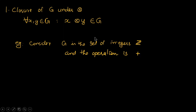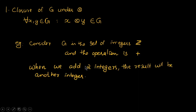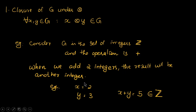Let us find out whether the closure property is satisfied. When we add two integers, the result will be another integer, so the result also belongs to the set of integers. For example, if we take X equal to 2 and Y equal to 3, then X plus Y is equal to 5, which belongs to the set of integers. So we can say that the closure property is satisfied by the group Z plus.